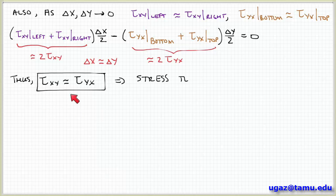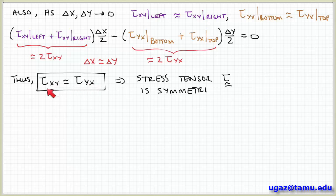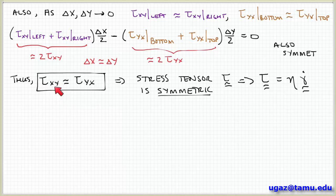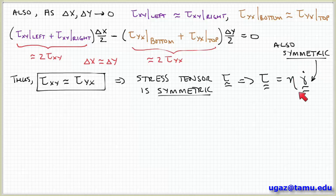This indicates that the stress tensor is symmetric. The stress tensor is a matrix with nine components, and a symmetric tensor is one where the off-diagonal components are equal — so tau_xy equals tau_yx. Since the stress tensor is related to the rate of deformation tensor by Newton's law of viscosity, this implies that the rate of deformation tensor also has to be symmetric.